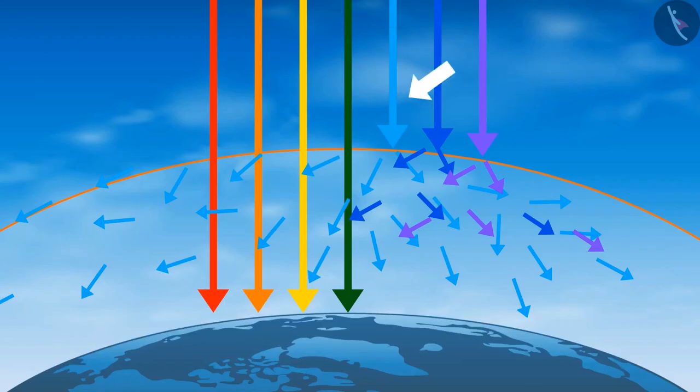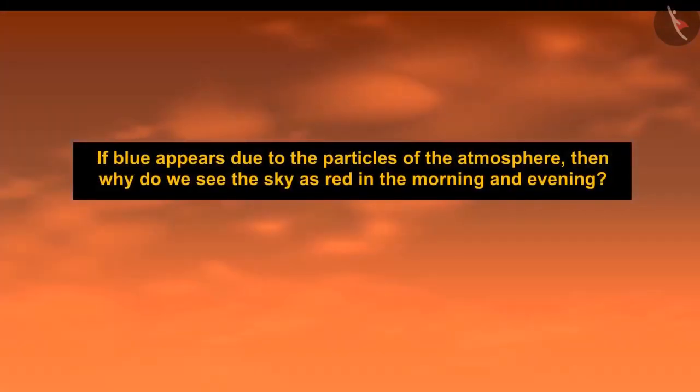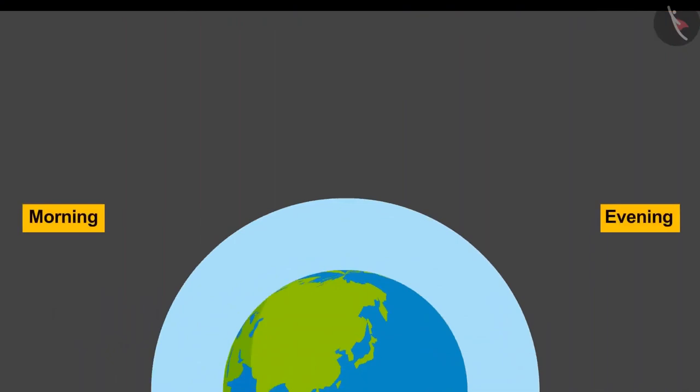So now, if sky appears blue due to the particles of the atmosphere, then why do we see the sky as red in the morning and evening?